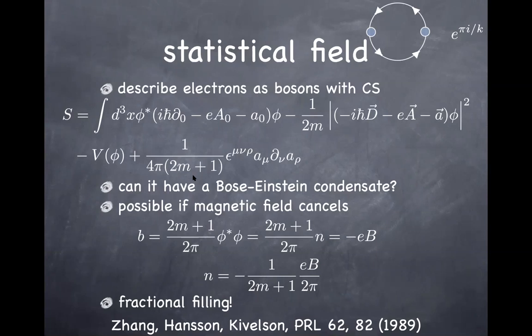Student: Just hypothetically, could interacting bosons give you a fractional quantum Hall state? Then I suppose you'd get an even fraction instead of an odd fraction.